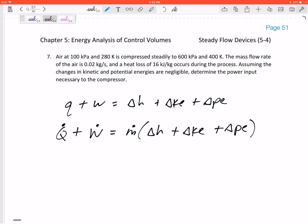So this is the equation I would start with. It told us KE and PE were negligible. Now usually q is negligible, but if it tells it to us, we've got to include that. This is our equation for the compressor.